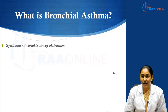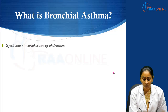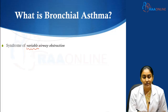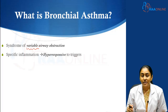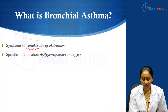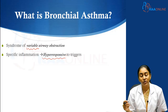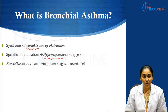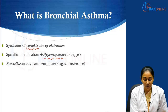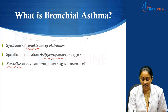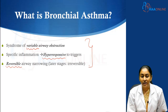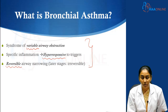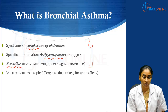Bronchial asthma is a syndrome characterized by variable airway obstruction — stress being on the term variable. There is a specific inflammation that occurs which results in airway hyper-responsiveness. The airway is going to respond excessively through excessive bronchoconstriction to various triggers, resulting in reversible airway narrowing. So this is a syndrome of variable, reversible airway obstruction resulting from a specific type of inflammation which brings about airway hyper-responsiveness.